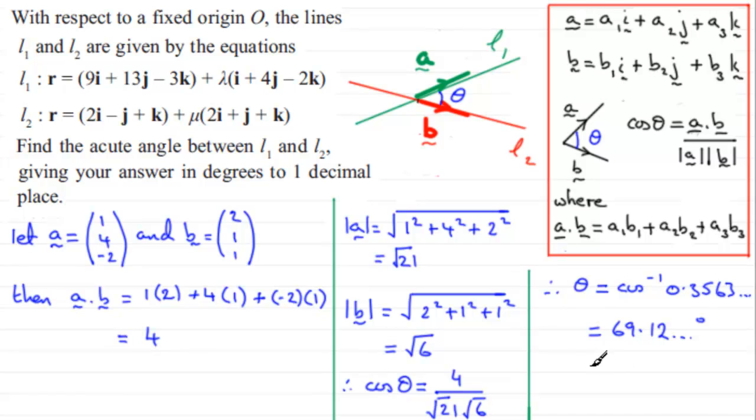We're asked to give our answer in degrees to one decimal place. So that's going to be 69.1 degrees to one decimal place.